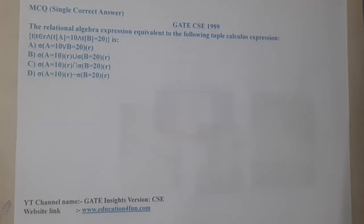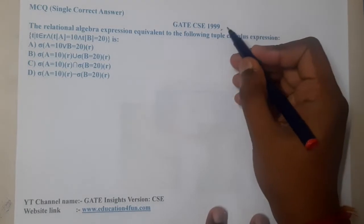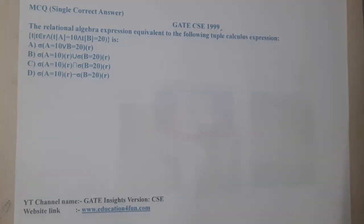Hello guys, we are back with our next lecture. In this lecture, let us go through the next question. This question belongs to GATE CSE 1999. The given question is: the relational algebra expression equivalent to the following tuple calculus relation.